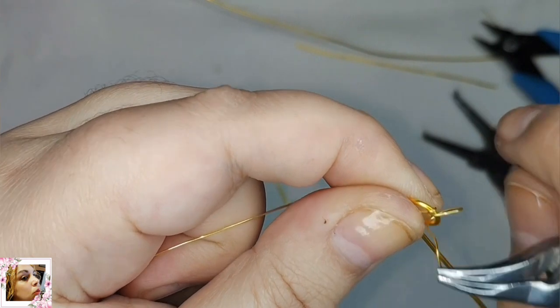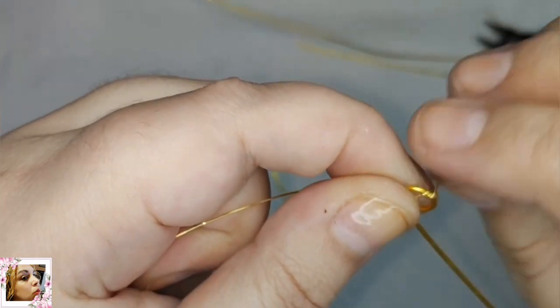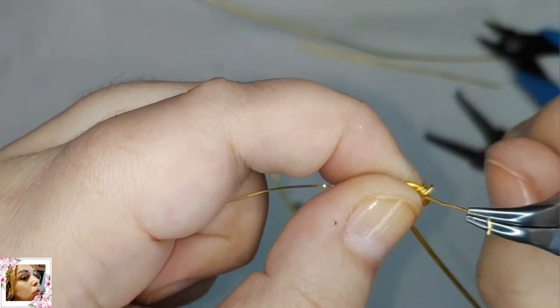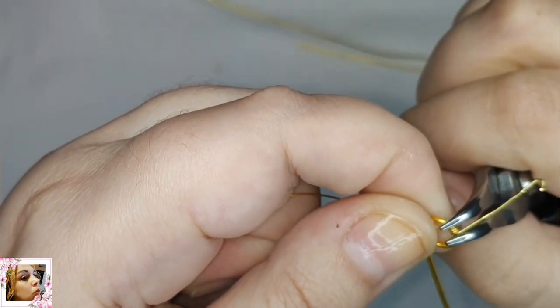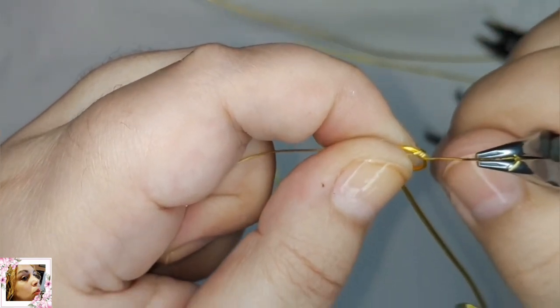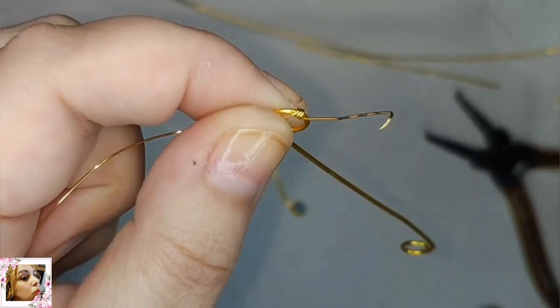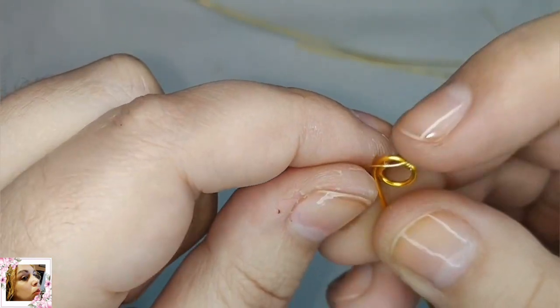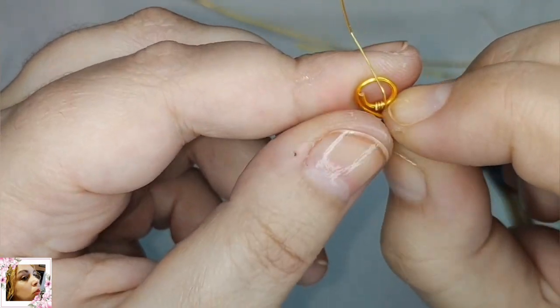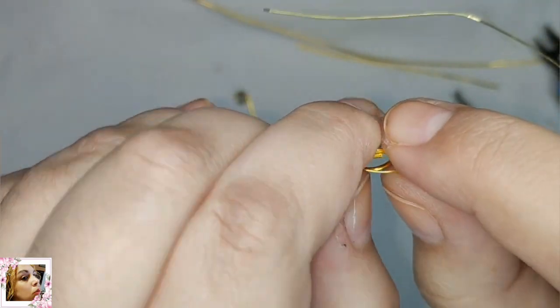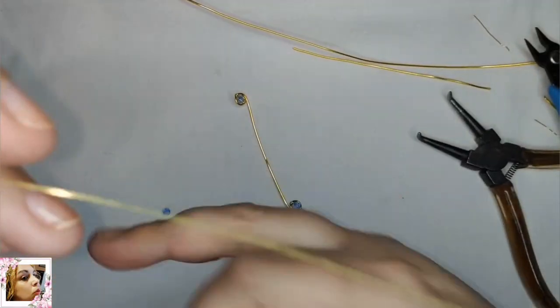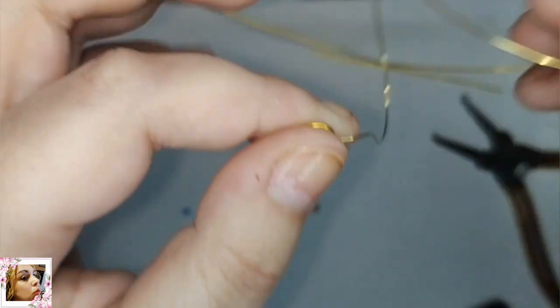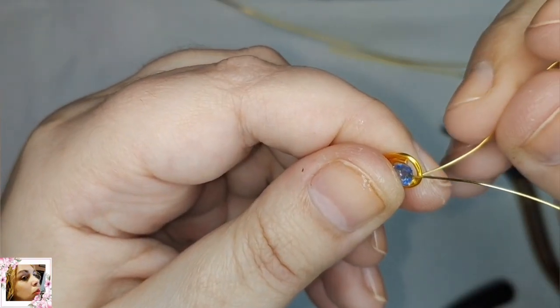Esta es la primera parte, todo va a ir por encima, esta pulsera tiene revés y derecho. Significa que va a ir la bola por un lado, va a sobresalir un pelín. Podéis usar avalorio mayores, pero a mí me parece recomendable esta medida para este diseño en concreto. Colocamos el avalorio y hacemos lo mismo.